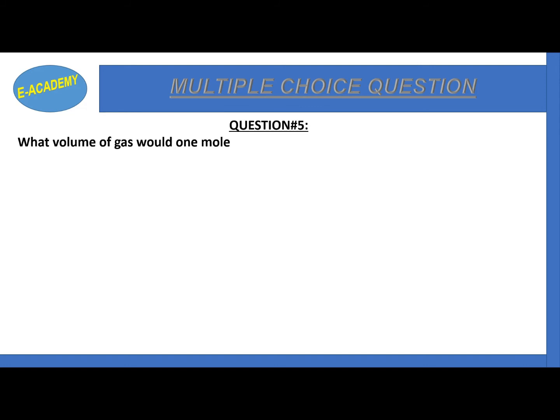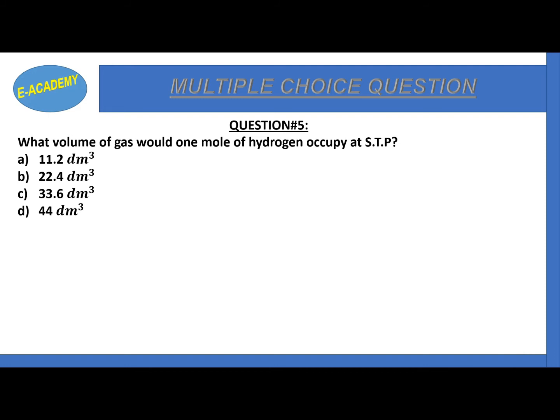Question number 5: what volume of gas would one mole of hydrogen occupy at STP? Options are: 11.2 dm³, 22.4 dm³, 33.6 dm³, or 44 dm³. One mole of any gas at STP occupies 22.4 dm³, so the correct answer is option B - 22.4 dm³.